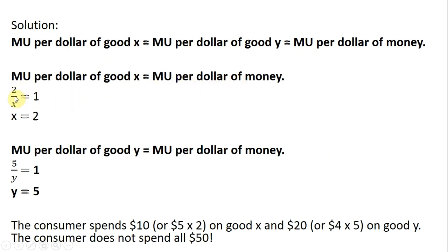Here's the marginal utility of good x that we saw in the last screen, 2 divided by x. We set that equal to the marginal utility per dollar of money, which is 1. Solving for x, x equals 2. So the consumer will buy 2 units of good x.